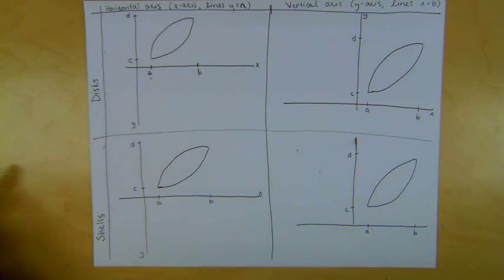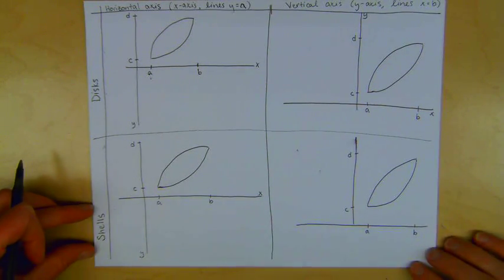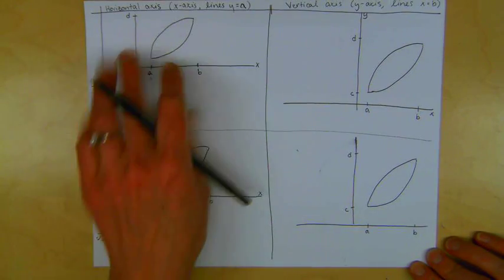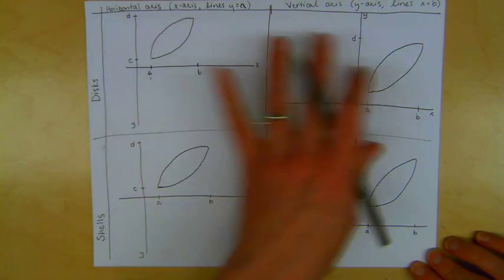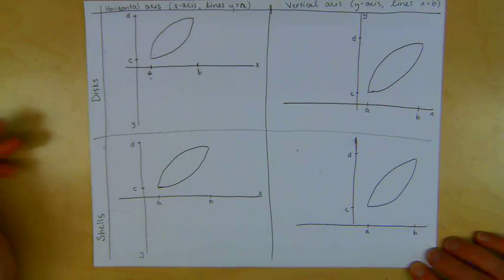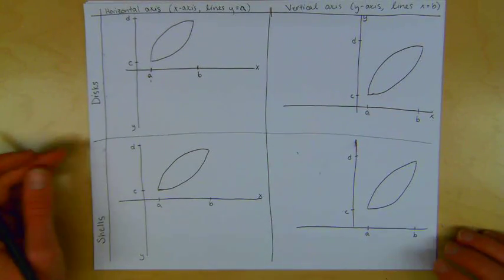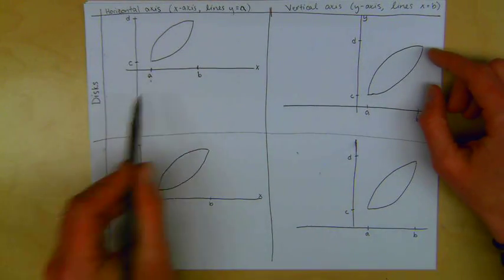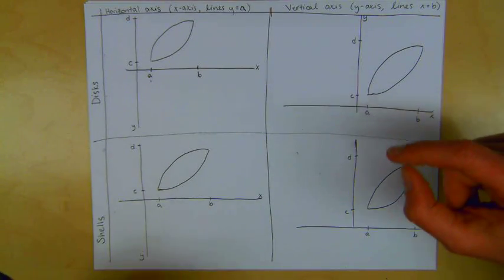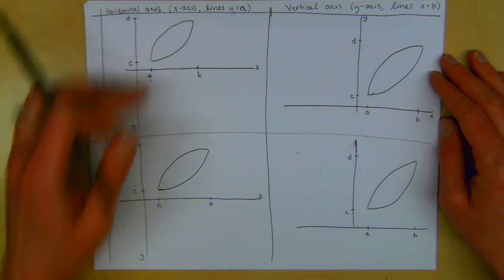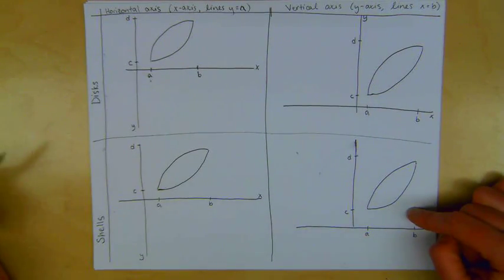In this video, I want to demonstrate the difference between shells and disks, and the difference between rotations about the horizontal axis and the vertical axis. It's hard to keep all of these different pieces straight, and hard to keep track of what's a dy and what's a dx. This is supposed to be a clarification because I'm going to provide pictures for each one side by side, so it's easier to identify what's going on.